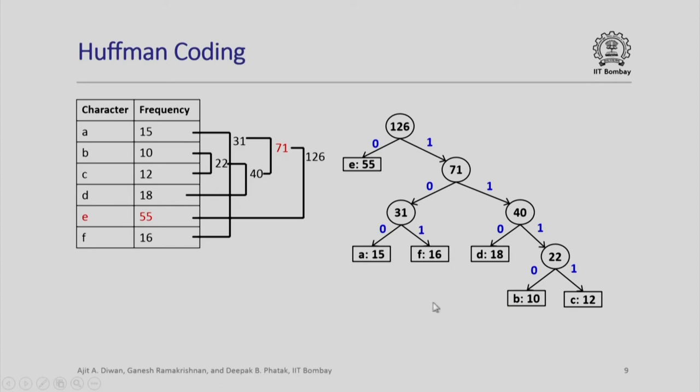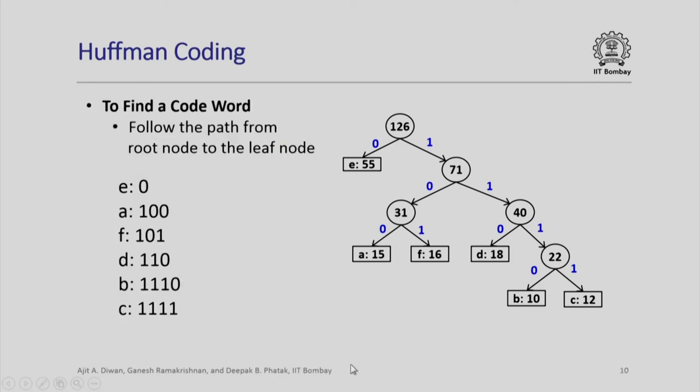All that we need to do now is associate the code with the symbols depending upon what are the values that we have associated with the left and right branch trees like 0, 1. For example, E could be represented simply by 0. How would we represent A, F, D, B, C? We would traverse the tree and use the bits that we encounter to collectively represent individual characters.